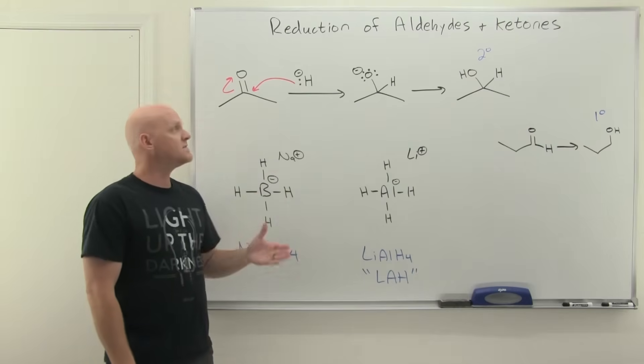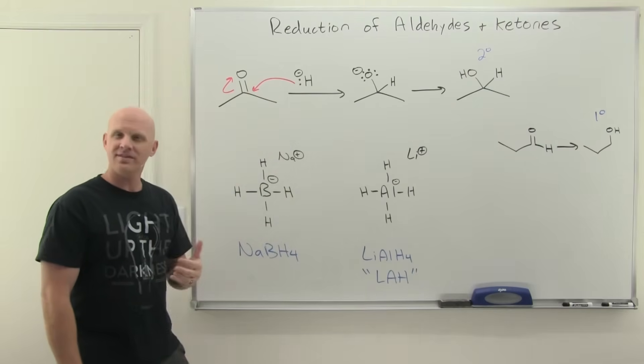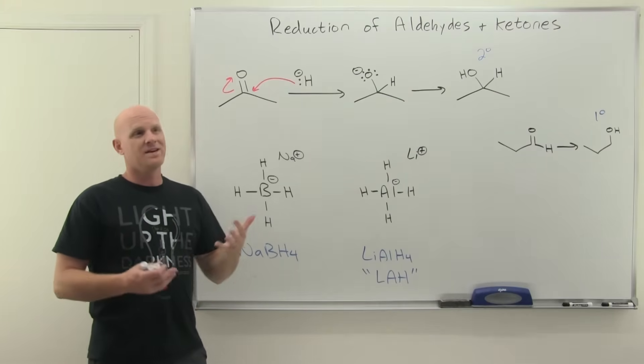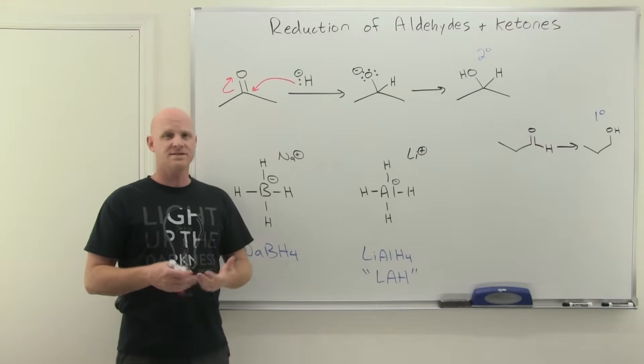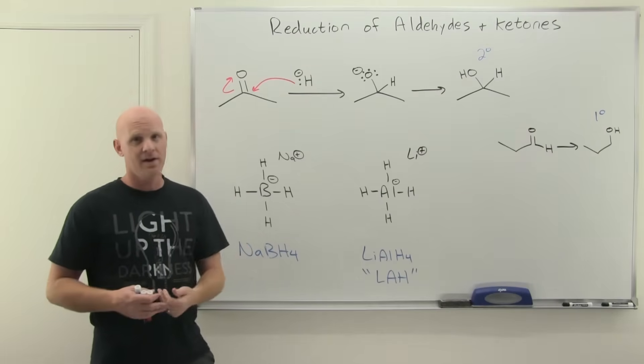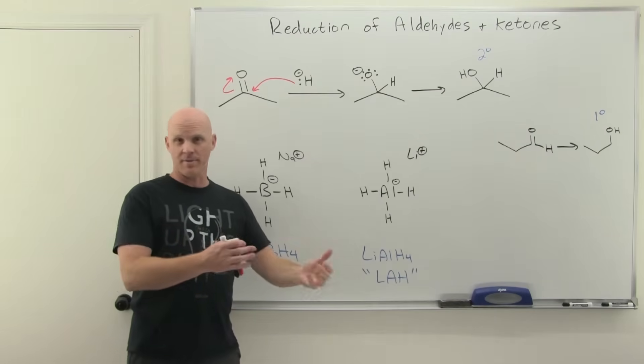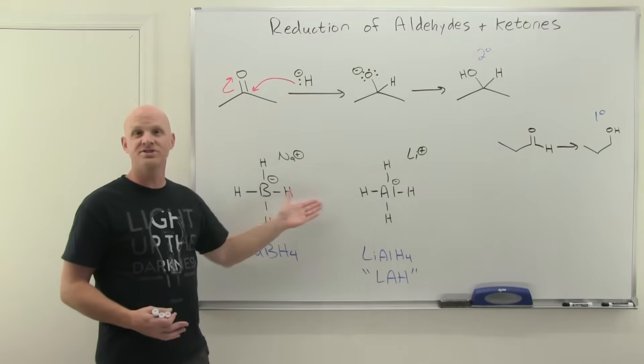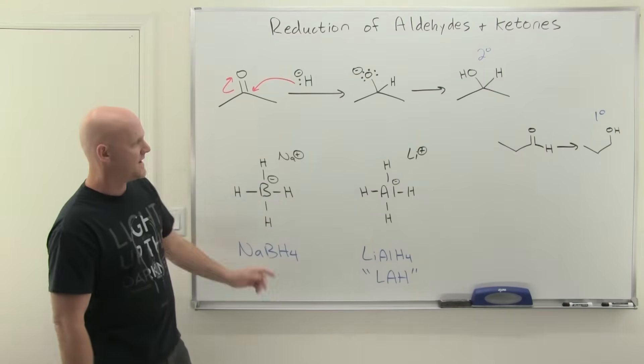These hydride reagents are the equivalent of having a hydride in the same sense that a Grignard was the equivalent of having a carbanion. Carbanions are difficult to form, so we use organometallics. These are the equivalent of having a hydride ion, a hydrogen anion. In this case, we have the hydride bonded to a metal.